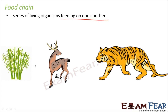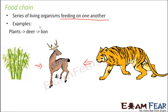Let us look at a simple example. Plants are eaten by deer, because deer are herbivores and depend on plants for their food. This deer then becomes food for another animal like a tiger. So it forms a chain: plants eaten by deer, and deer eaten by the tiger. This is an example of a three-step food chain because it has three levels or steps in it.